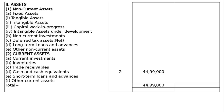B part - non-current investments, C part - deferred tax assets net (how much we have paid in advance), D - long-term loans and advances, E - other non-current assets. 2. Current assets: A - current investments, B - inventory, C - trade receivables, D - cash and cash equivalents, E - short-term loans and advances, F - other current assets. Then total.